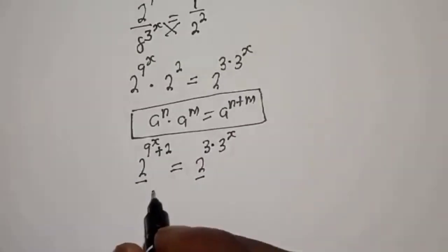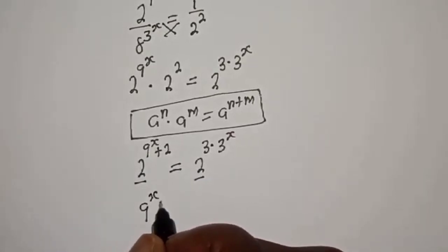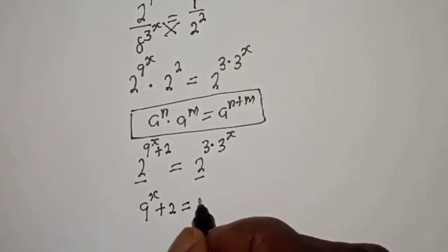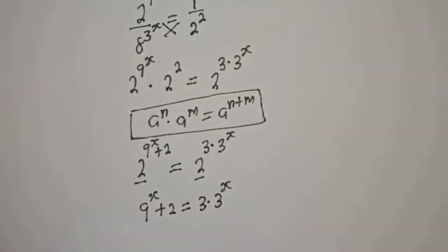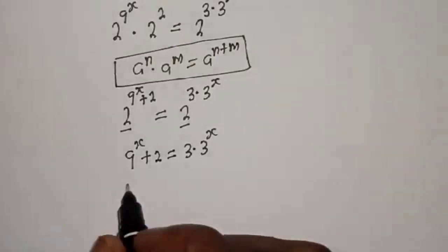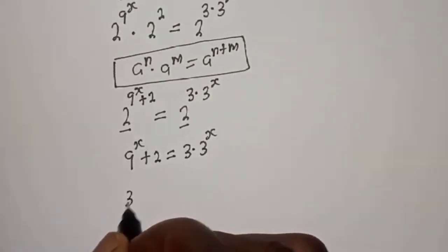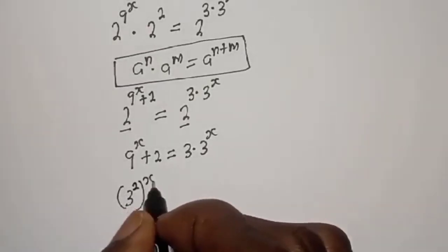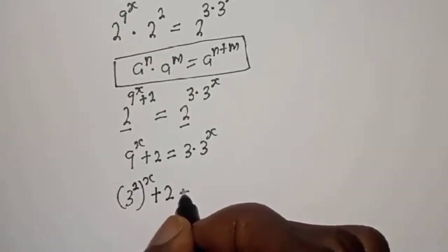We work with the exponent. Here we have 9 raised to power s plus 2, is equal to 3 multiplied by 3 raised to power s. Then 9 raised to power s can be written as 3 raised to power 2s, so 3 raised to power 2s plus 2 is equal to 3 multiplied by 3 raised to power s.